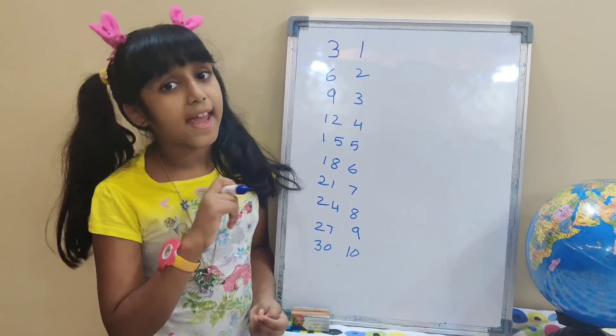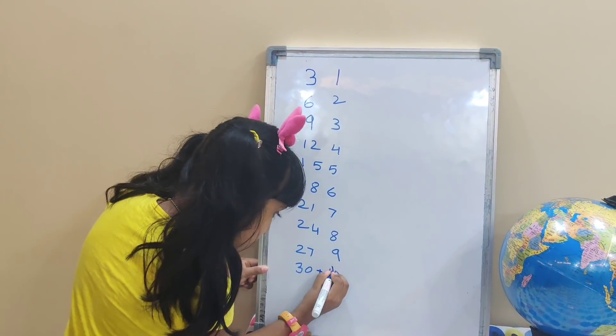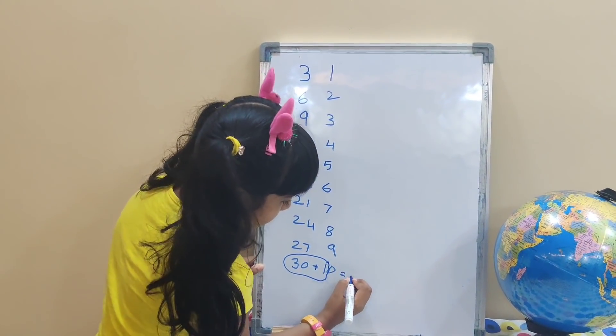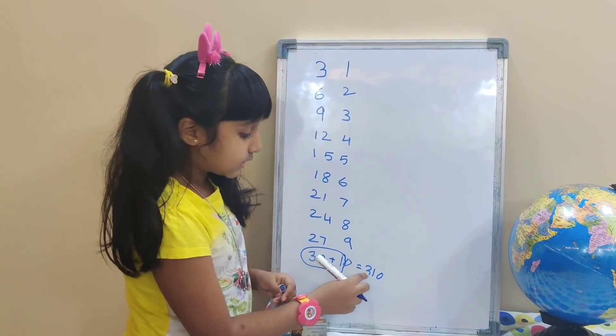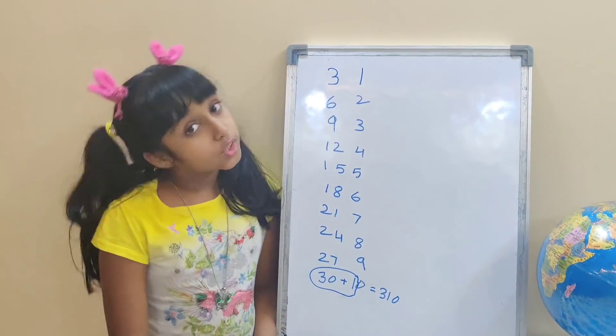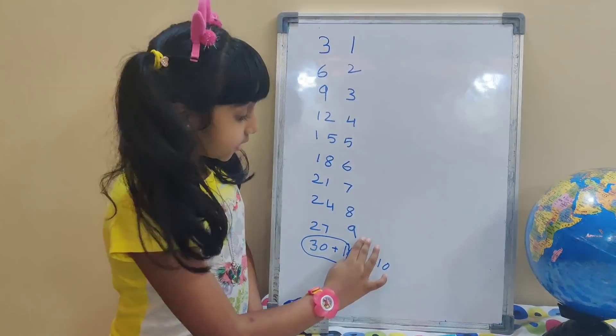Now here the carry over is only for the last digit. So let's do it. 30 plus 1 equal 31. So 31 and 1 for 0 that is 310. We only had to do addition for the last number because there was no carry over till 9.